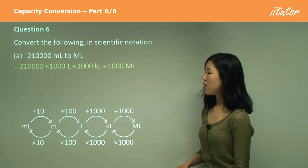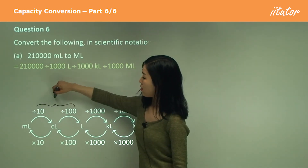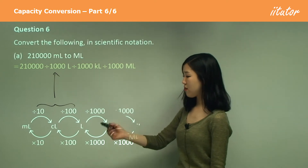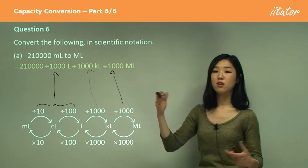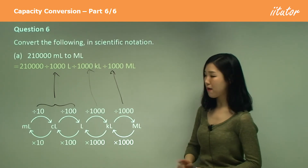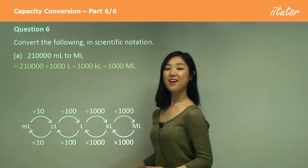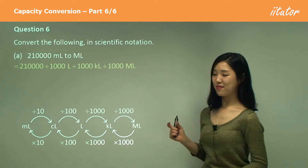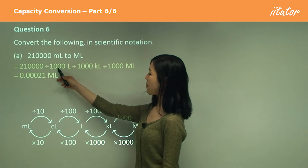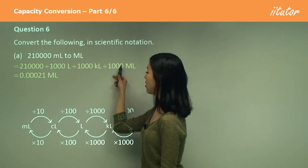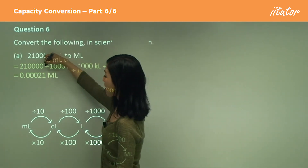Dividing by a thousand three times means we're dividing by nine zeros total in one, two, three, four, five, six, seven, eight, nine zeros. So we go back nine places, meaning there are three zeros before the 21 with a decimal point. Make sure you have the point.